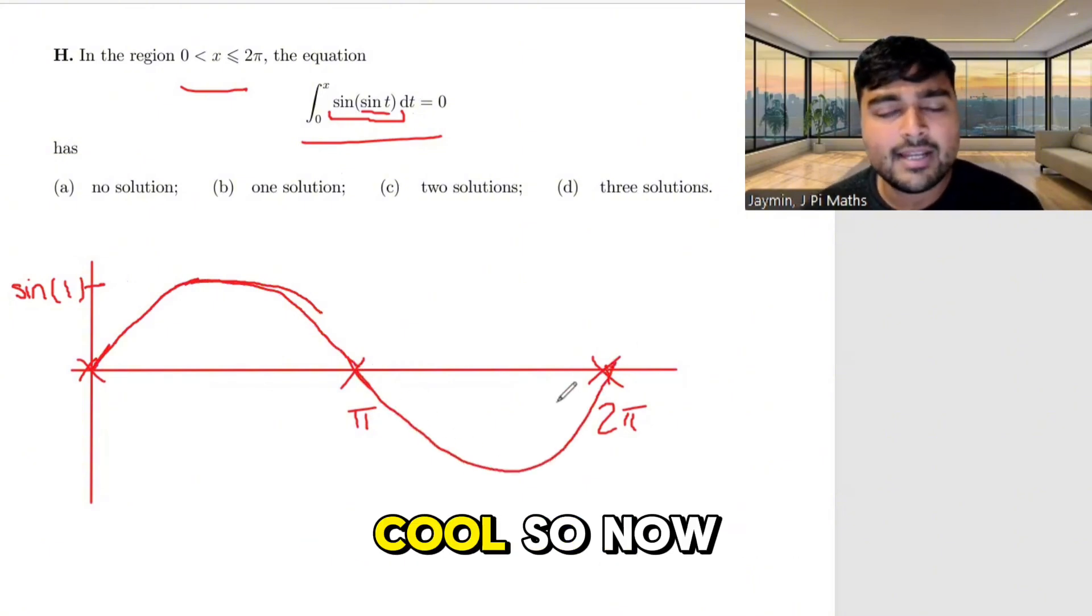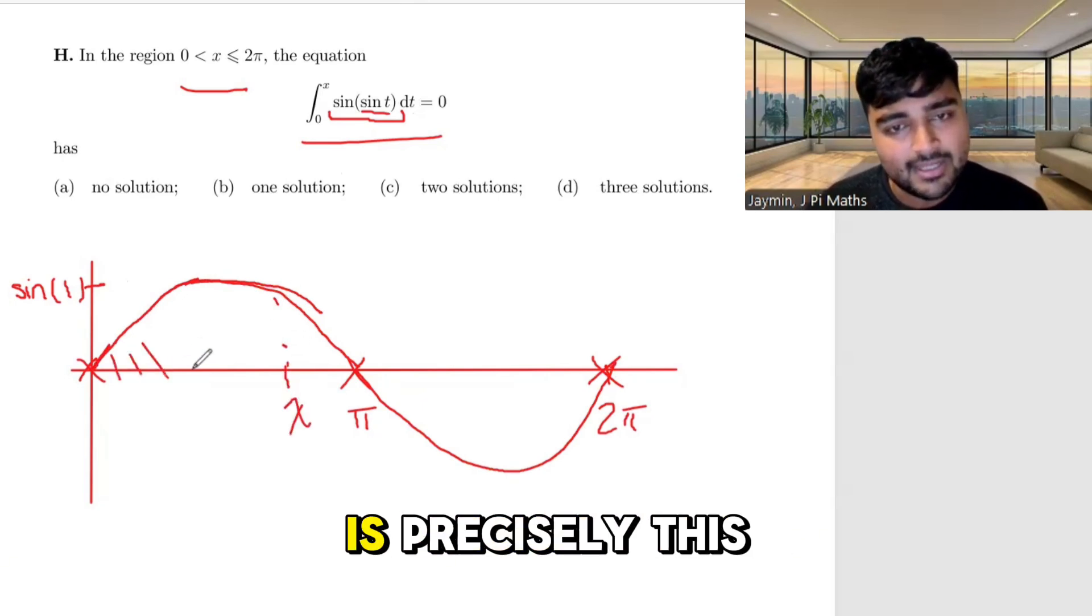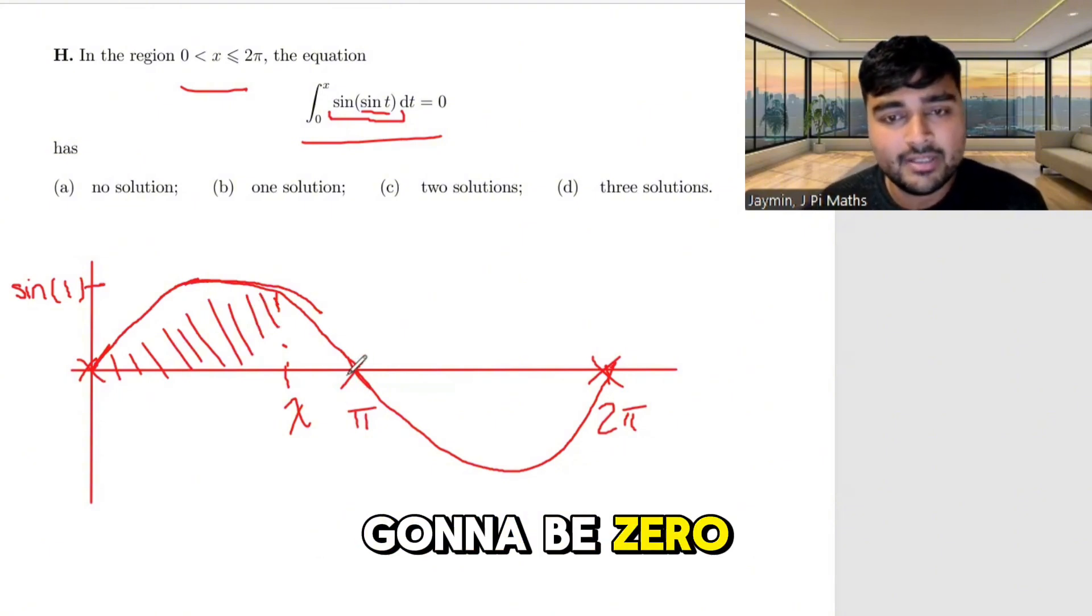Okay, cool. So now what's the integral from 0 to x? Well, if x is somewhere over here, the integral from 0 to x is precisely this area there. And that's clearly not going to be 0.